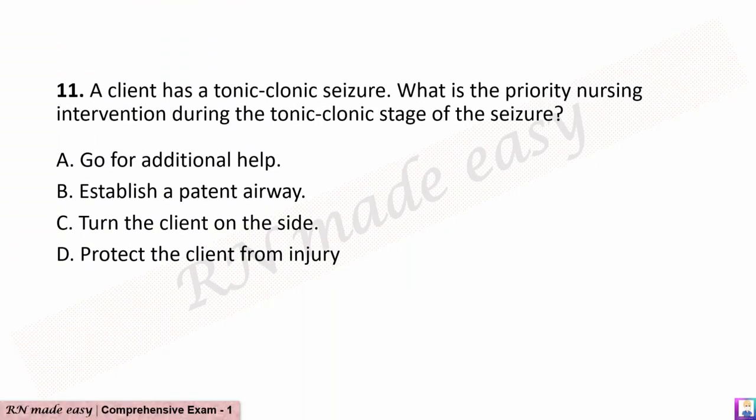Question 11. A client has a tonic-clonic seizure. What is the priority nursing intervention during the tonic-clonic stage of the seizure? A. Go for additional help. B. Establish a patent airway. C. Turn the client on the side. D. Protect the client from injury.